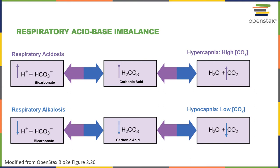Respiratory alkalosis is really just the opposite. If the pulmonary ventilation rate is very high — if you're breathing rapidly, if you're hyperventilating — this could lead to hypocapnia, that is a low partial pressure of carbon dioxide in the blood. As the carbon dioxide concentration is decreased, this will lead to decreased carbonic acid concentration and a decrease in the hydrogen ion concentration, or an increase in blood pH.